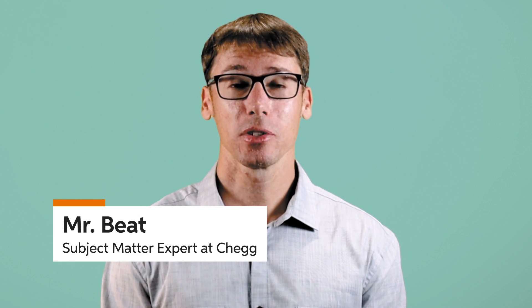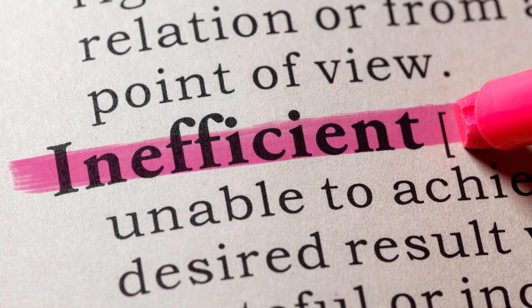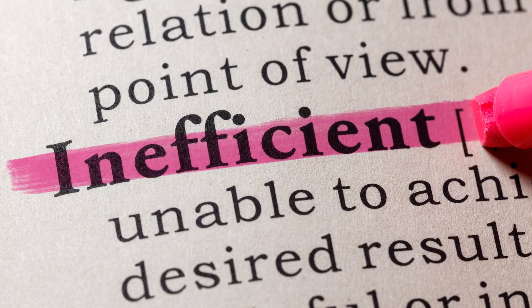Hi, I'm Mr. Beat, one of the subject matter experts here at Chegg. In this video, we'll examine an efficient market allocation of society's resources and explain how goods with positive externalities create inefficiencies due to underproduction. We'll also look at how goods with negative externalities create inefficiencies due to overproduction.